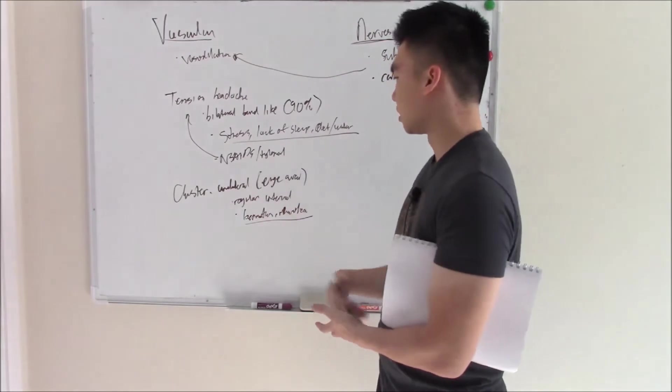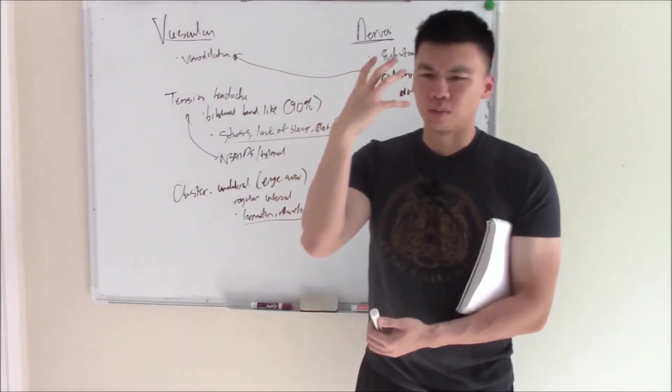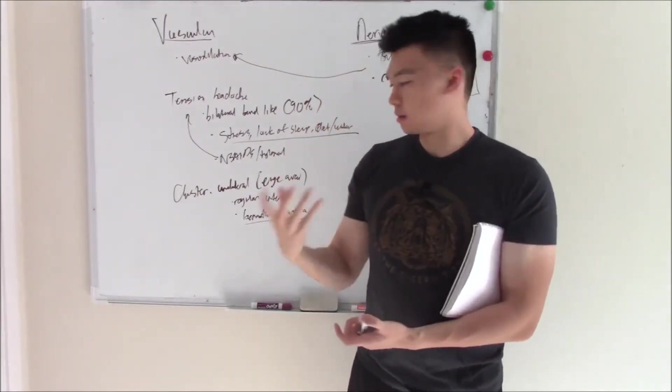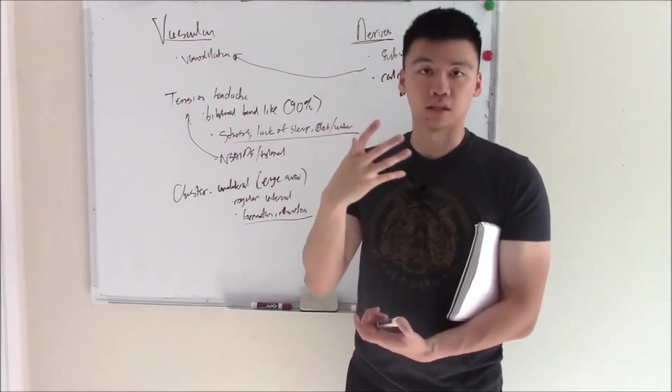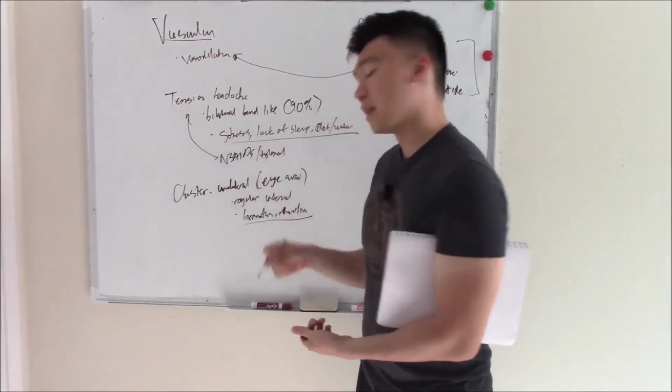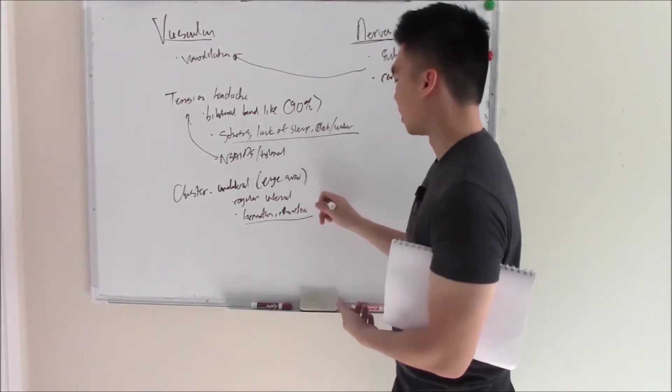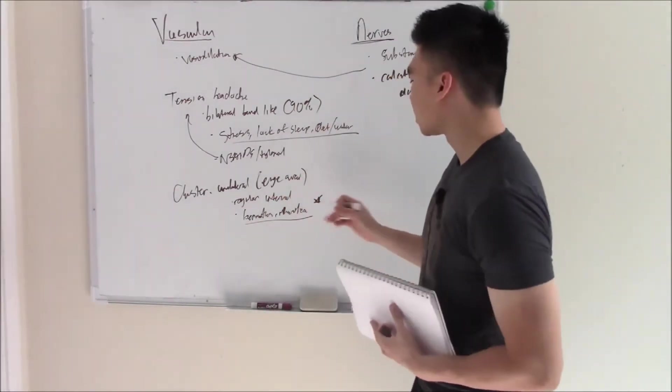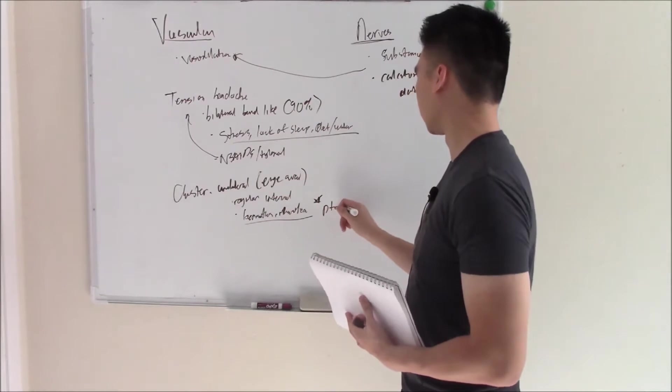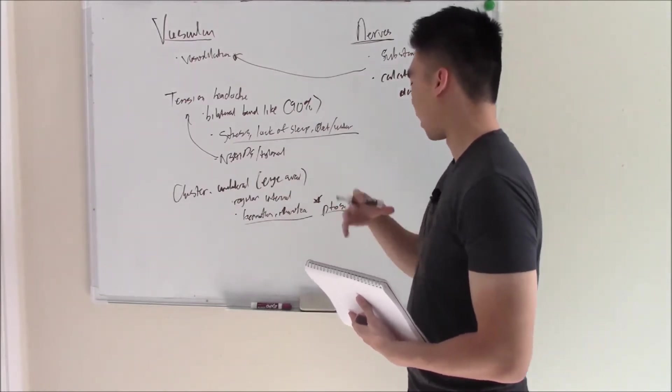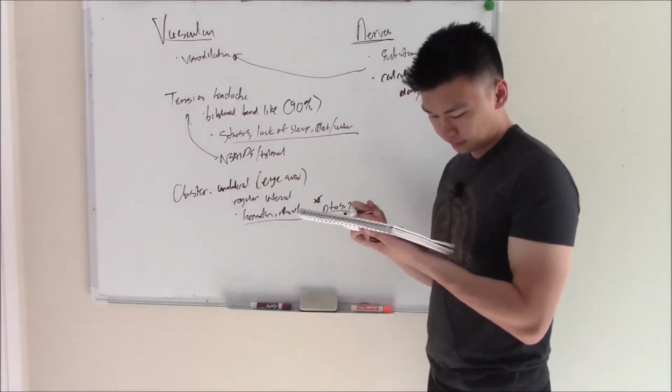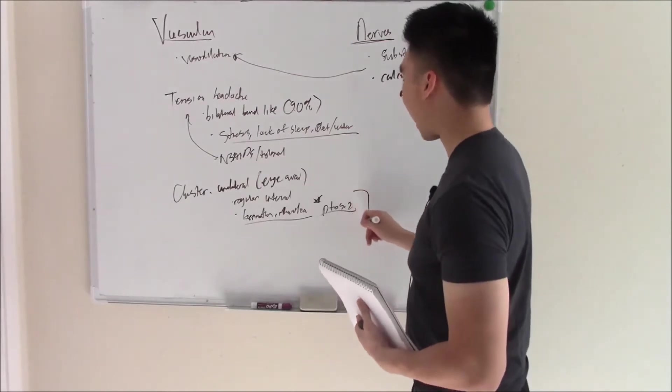Now lacrimation is not specific to cluster headaches. Any sort of pain in your eye area can cause lacrimation. That's kind of like a reflex. But because it's so classically seen in this area, lacrimation and rhinorrhea are big signs. It also seems to cause ptosis. So all eye things.